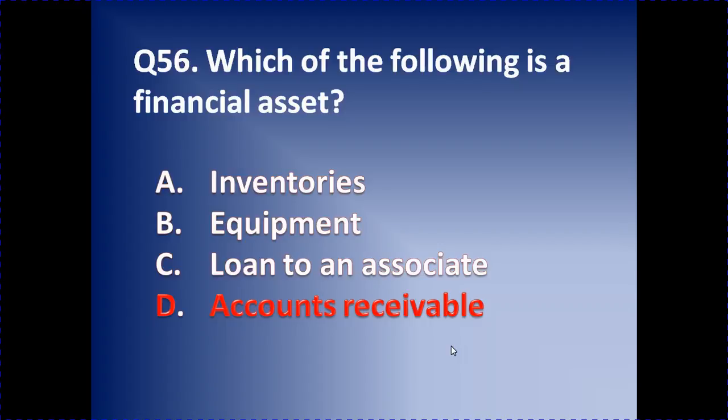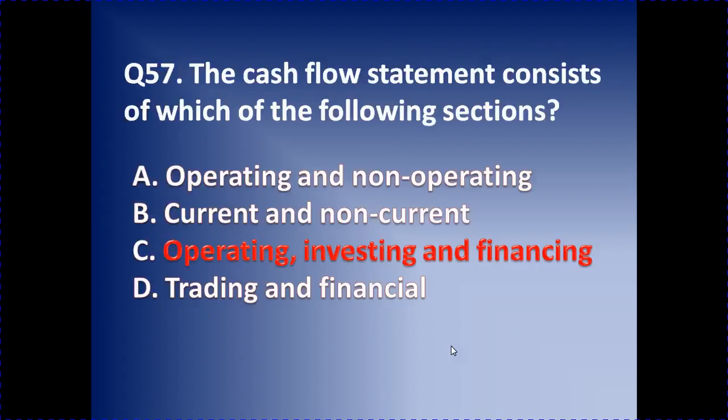Which of the following is a financial asset? Accounts receivable is the right answer here because it can be more easily convertible into cash than the other three options. So accounts receivable is the right answer. Moving on to question number 57.